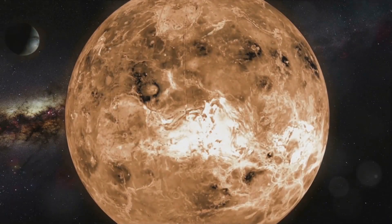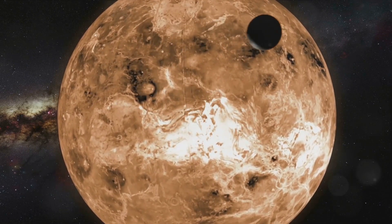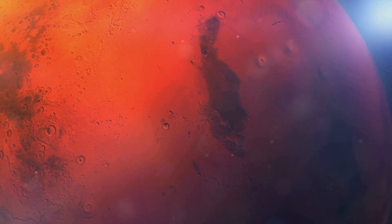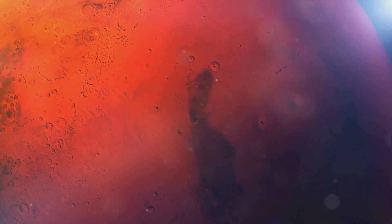Their first stop was Mercury, the planet closest to the sun. 'It's very hot during the day and very cold at night,' explained Cosmo. Milo marveled at the extreme temperatures.